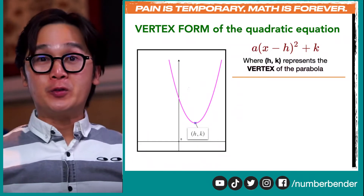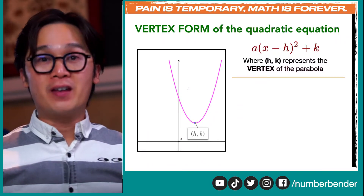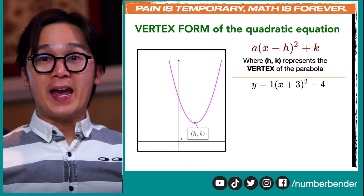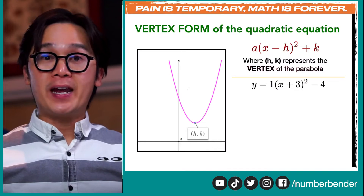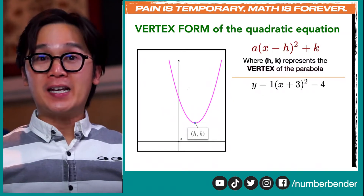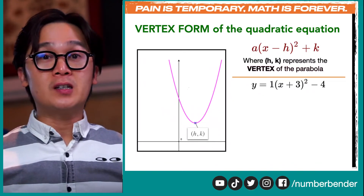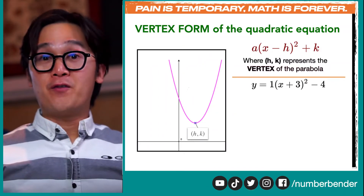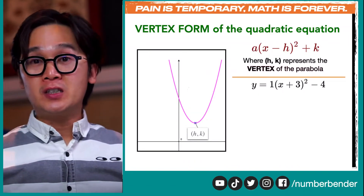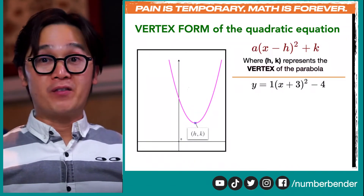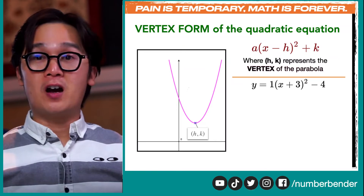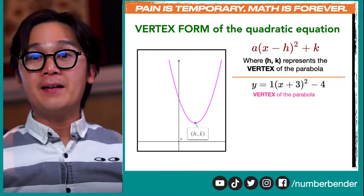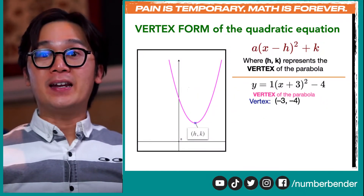We need to keep that in mind so we're not confused about the value of the vertex. For example, if we have y equals 1 times quantity x plus 3 squared minus 4, where h and k is the vertex, our vertex here would be the opposite of positive 3, which is negative 3, and negative 4, because the formula gives us plus k, which is just the value of k in our equation. So the vertex of this quadratic equation is going to be at negative 3 and negative 4.